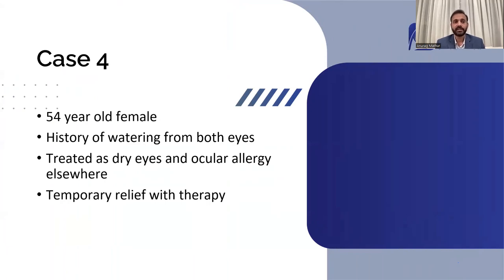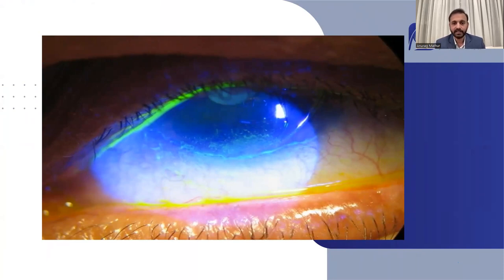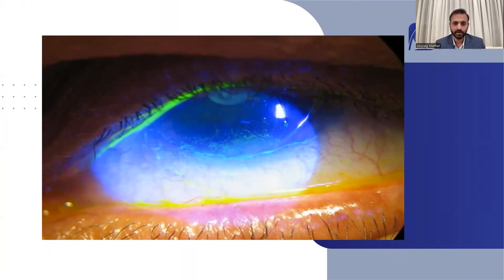Case number four: again presented and treated as conjunctivitis but was not. A 54-year-old female came with a history of watering from both eyes and was treated for dry eyes and ocular allergy, with temporary relief but not completely satisfied. On examination, if you look carefully at the lower limbus, there is a line taking up fluorescent stain running across the lower half of the cornea, and adjacent to that are a lot of dry spots and SPKs. This line is an extra fold of conjunctiva folded upon itself, riding over the cornea beyond the limbus.